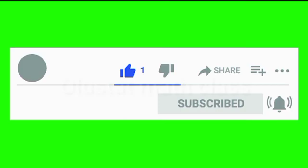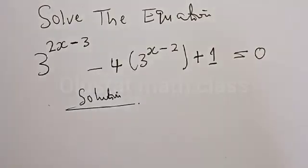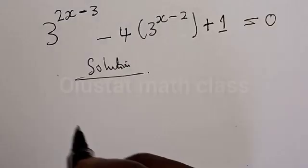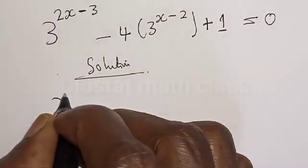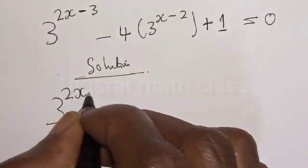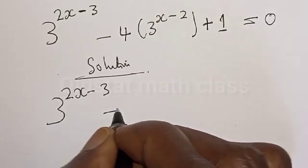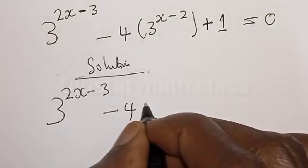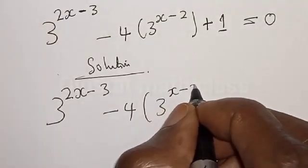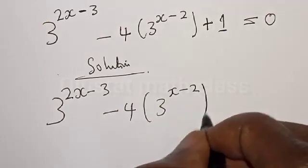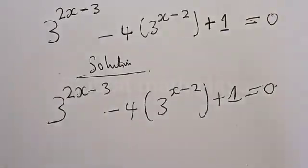Solution. We have the given equation: 3 raised to the power (2x minus 3) minus 4 times 3 raised to the power (x minus 2) plus 1 is equal to 0.